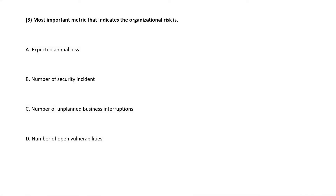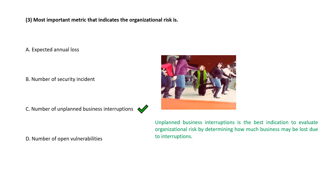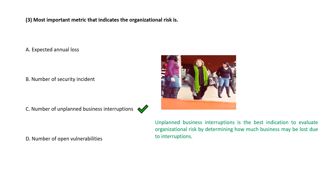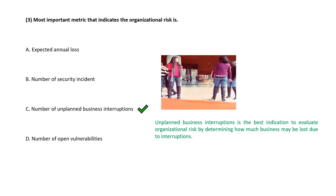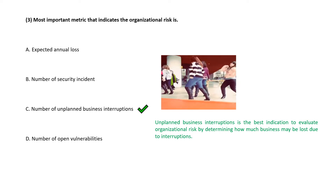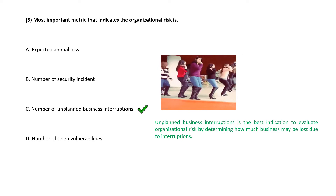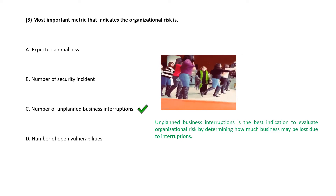Question 3. The most important metric that indicates the organizational risk is — correct answer is option C, number of unplanned business interruptions. Unplanned business interruption is the best indication to evaluate the organizational risk by determining how much business may be lost due to interruption.